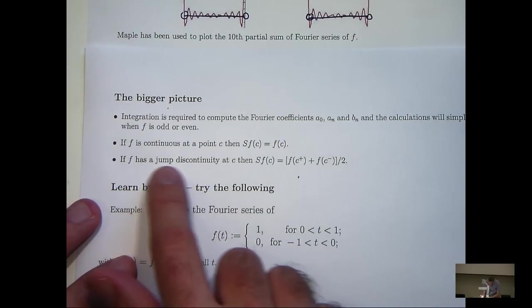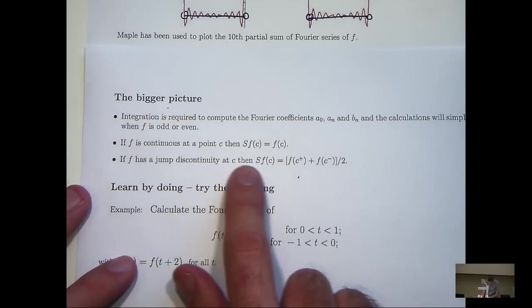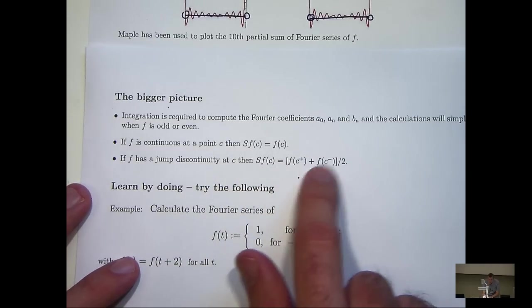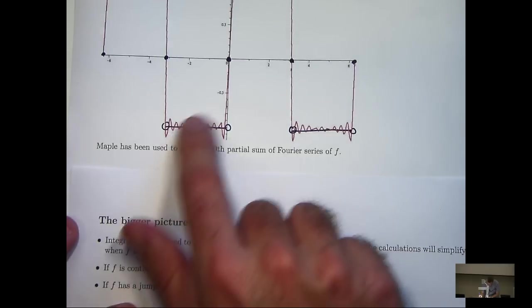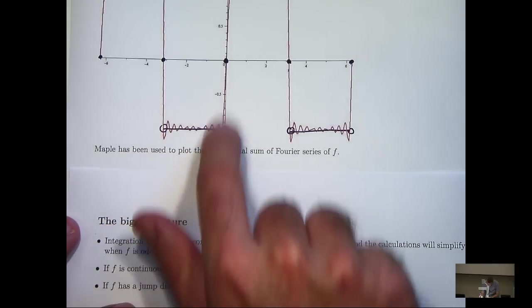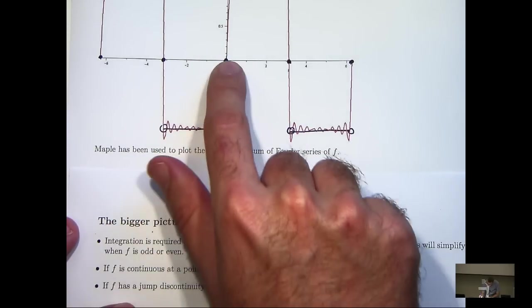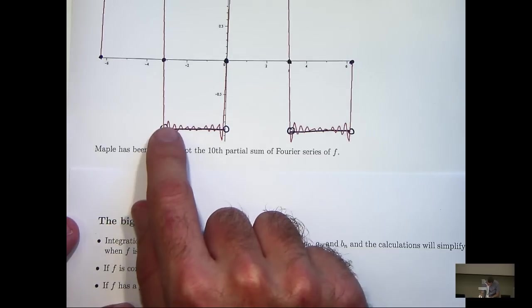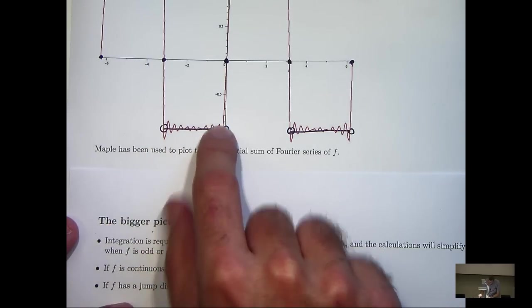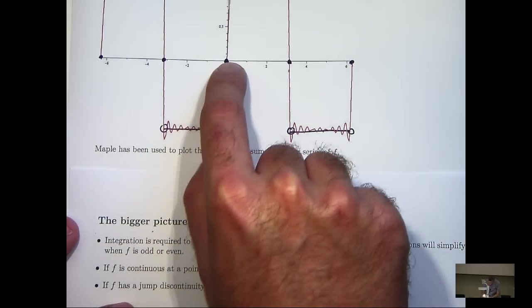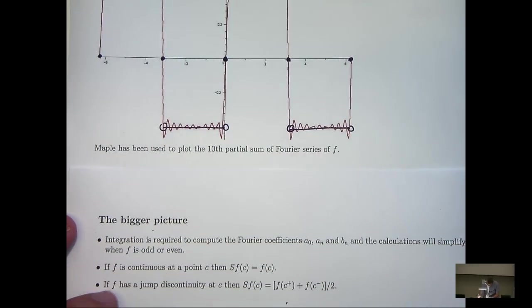If f has a jump discontinuity at a point c, then the Fourier series converges to, I guess, the average of these two limits. So you can see the blue graph has a jump at t equals 0. So what will happen is the Fourier series will actually converge to 0 at the point t equals 0.